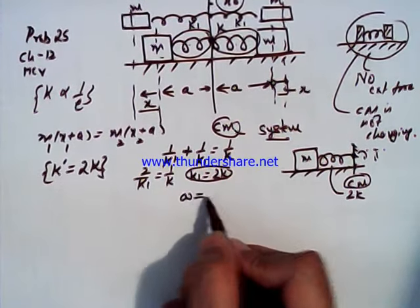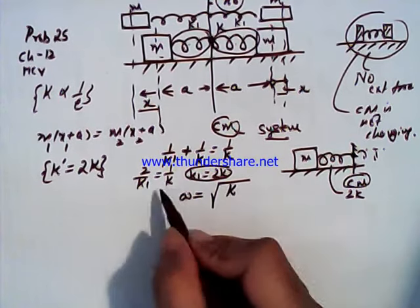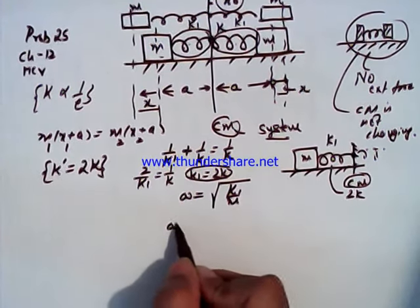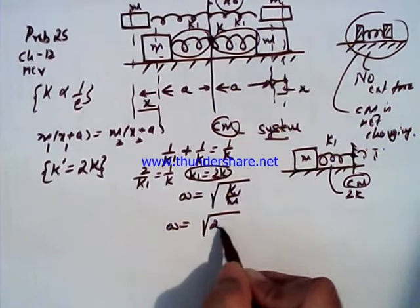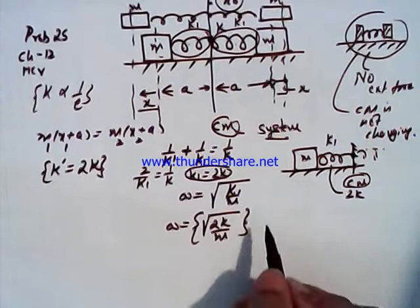Now omega of any spring mass system is K upon M. Here in this case it is K1 upon M. So omega would be equal to twice K upon M in this case. This is a very simple method.